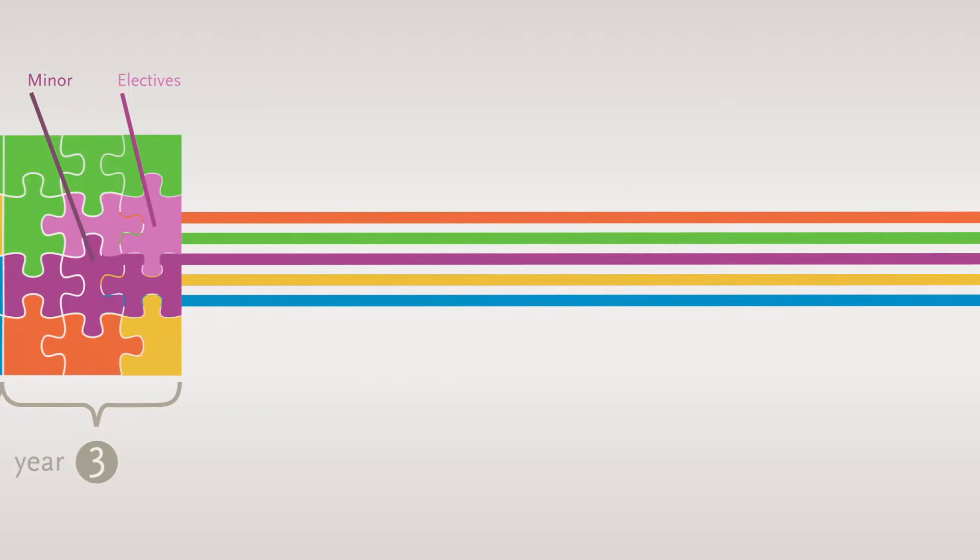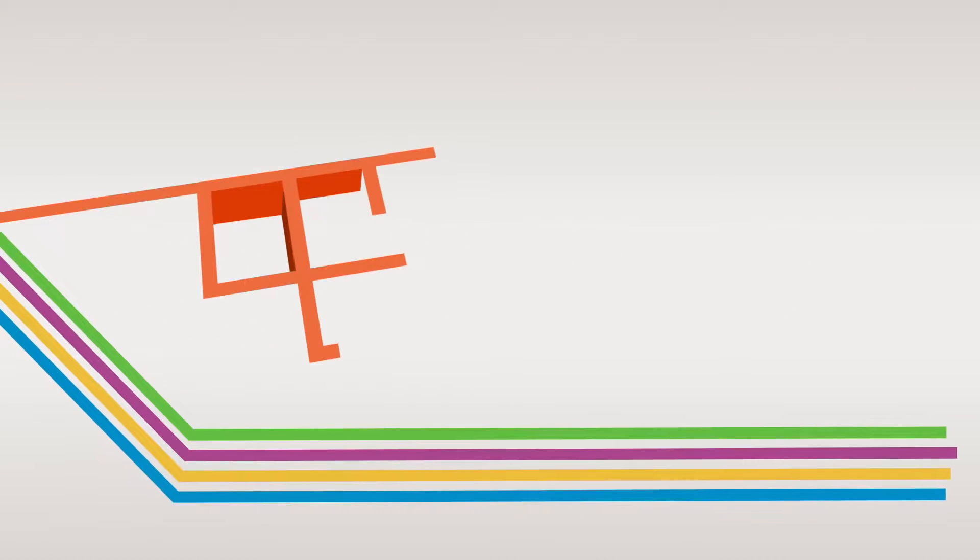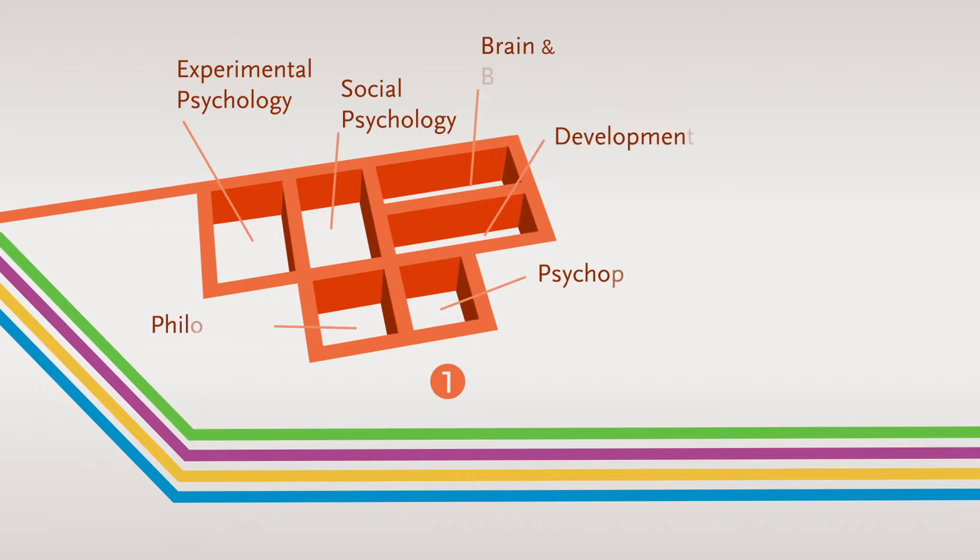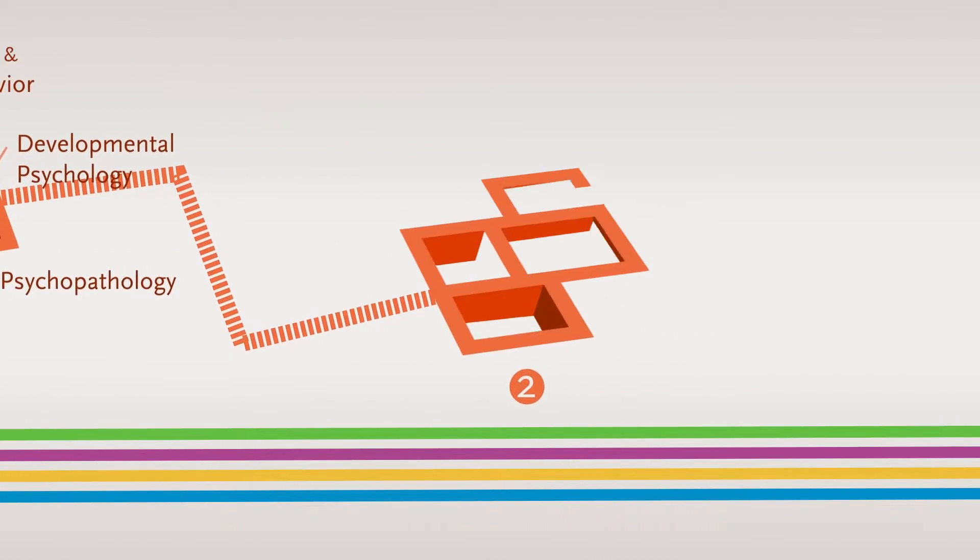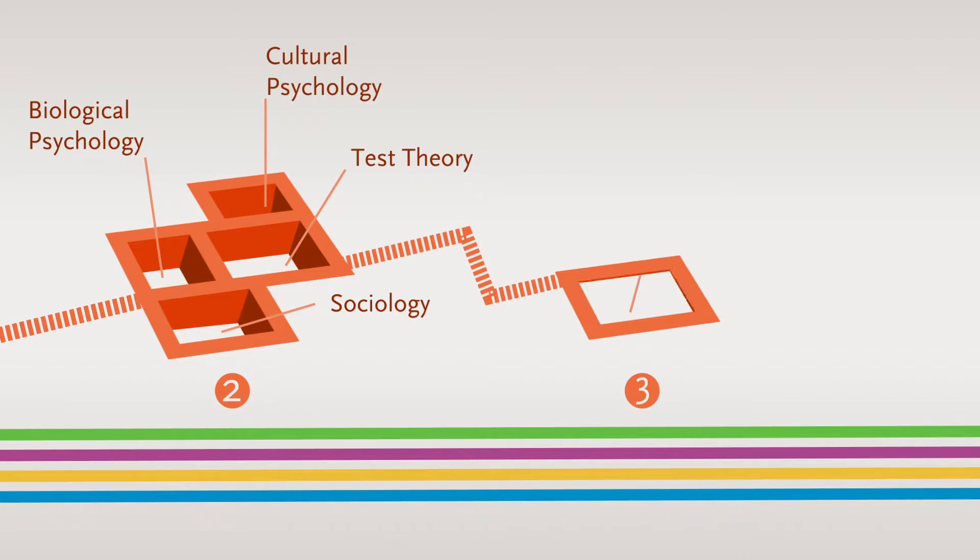The courses are part of five learning trajectories. The first learning trajectory is that of the basic training in psychology. The first year includes all the core subjects in psychology. The second and third years include courses that broaden your perspective on psychology.